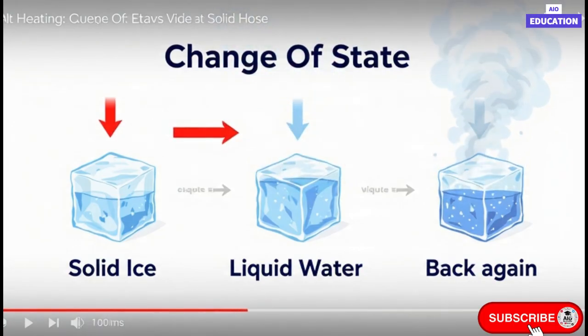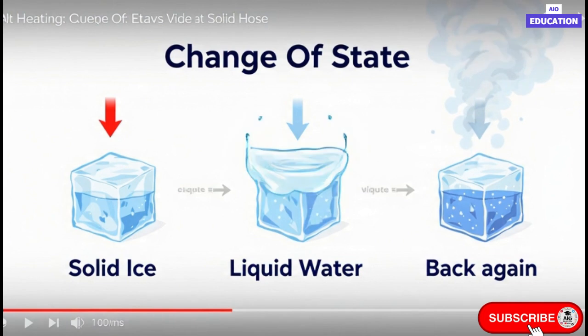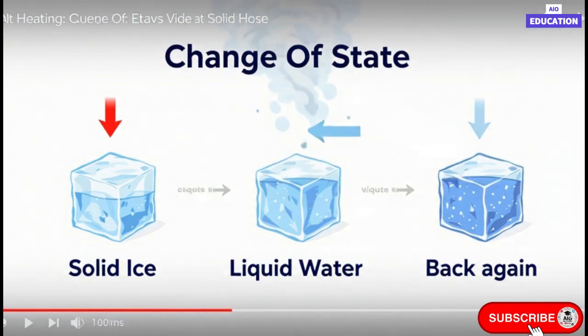When a liquid is heated, its particles move faster. And at a certain temperature, they gain enough energy to completely break free from each other and change into gas. This process is called boiling, and the temperature at which it happens is called the boiling point. Thus, when we supply heat to a liquid, its kinetic energy increases and the force of attraction between its particles decreases.